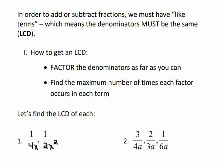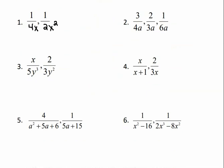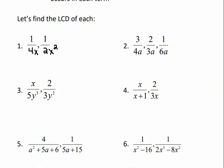So in order to get a least common denominator, first we need to factor the denominators as far as we can. Then find the maximum number of times each factor occurs in each term. And that's going to be our least common denominator. So let's look at number 1. We're not going to add or subtract yet — we're just going to find the least common denominators.